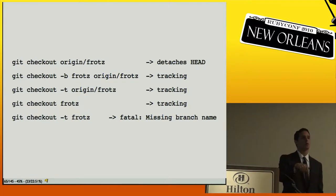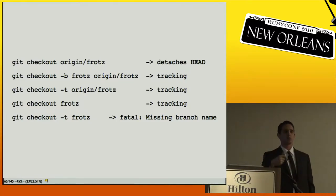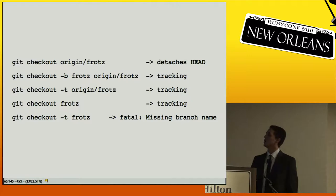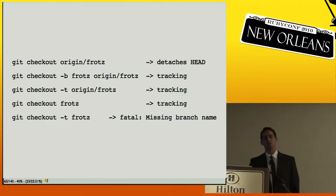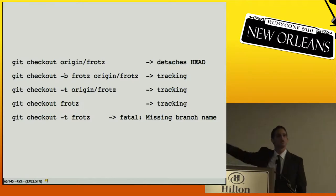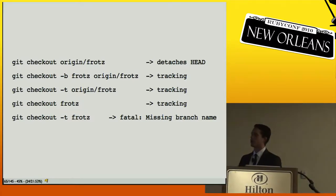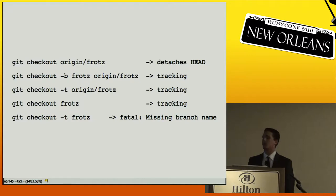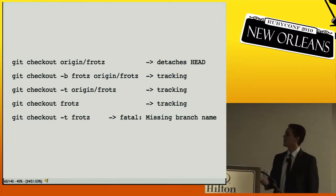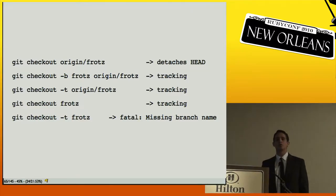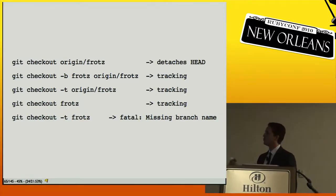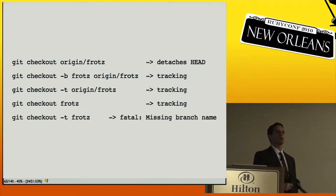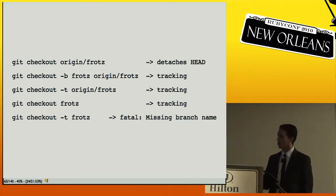Third: `git checkout -t [remote-branch]` — it copies the name and sets it up as tracking. Fourth is the most magical: `git checkout [branch-name-that-exists-on-a-remote]` — if it doesn't exist locally, Git assumes you want a tracking branch for it. Very confusing. I'd recommend the second form — it's the most explicit 'do what I say' version. Even after several years I still have to look this up every time.